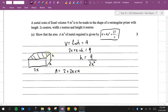Plus 2 lots of 2x times h, except h is 9 over 2x squared. That's for the front and the back. And then we need 2 lots of x times h, except h is 9 over 2x squared. And that's for the right and the left.